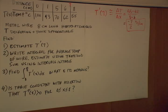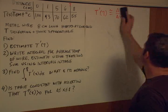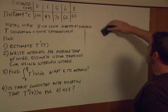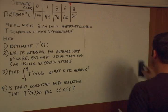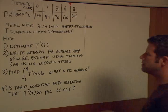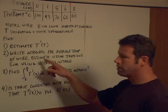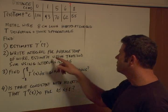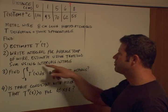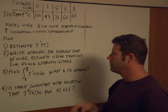I'm going to erase that because part B is going to take all of my space. It says: write an integral for the average temperature of the wire, and then estimate the average using a trapezoidal sum.